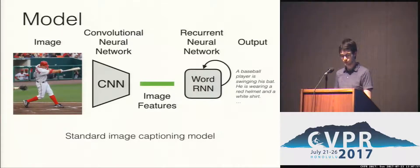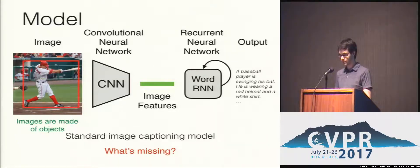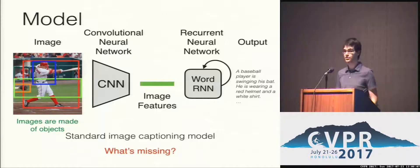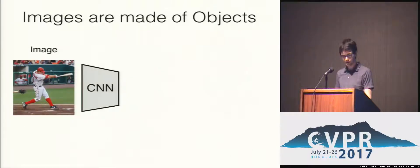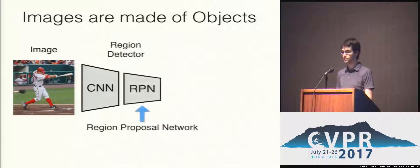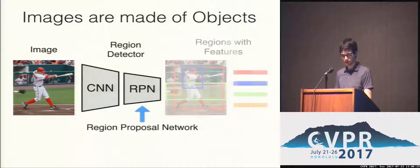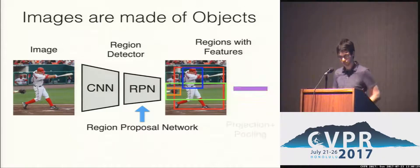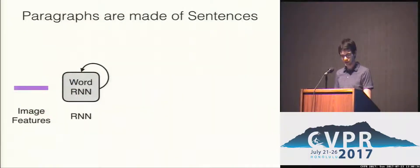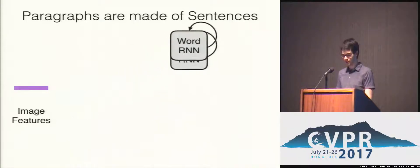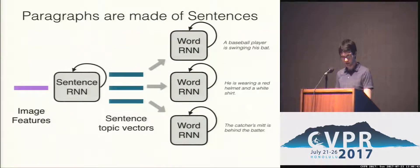We build our model by starting with a traditional image captioning model and then address its limitations. First, images are made of objects, which are a more granular semantic unit to reason about. Second, paragraphs are made of sentences, which are modular coherent statements. To decompose images into objects, we use a region proposal network to detect semantic regions of interest, extract features from those regions, then project and pool them together to form a representation summarizing all contents in the image. To decompose paragraphs into sentences, we instantiate a separate RNN at the word level for each sentence, with a sentence RNN that controls how many sentences there are and the input to each word RNN.